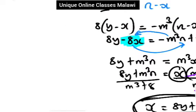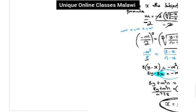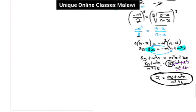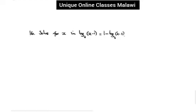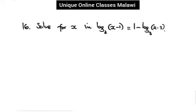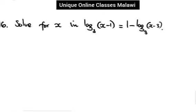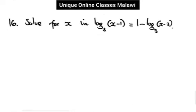Another problem — let's move forward. I would solve for x in: log of (x minus 1) base 3 is equal to 1 minus log of (x minus 3) base 3.